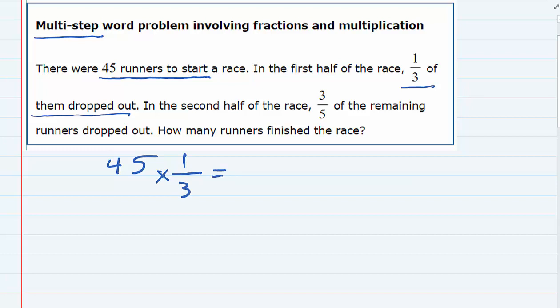And one-third of those drop out. So I would multiply by one-third, and that would give me how many dropped out in the first half. So to multiply, we can say the 45 is 45 over 1, and then cross-cancel the 3 and the 45. 3 goes into 3 once, 3 goes into 45 fifteen times.